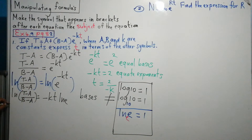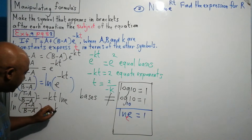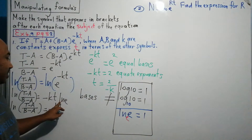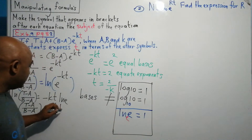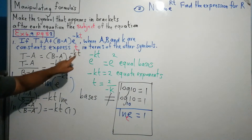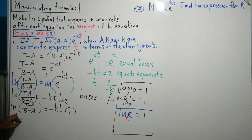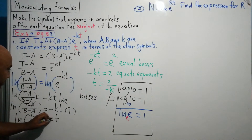Now, ln of E — the base is automatically E, so ln of E equals 1. So we have ln of T minus A divided by B minus A equals minus KT times 1, which simplifies to just minus KT. You can see why we introduced natural log: it makes it easier. We're looking for T, so all we do now is divide by minus K. So T equals ln of T minus A divided by B minus A, all divided by minus K.